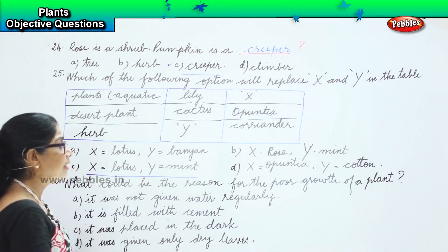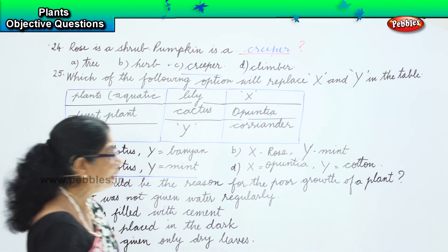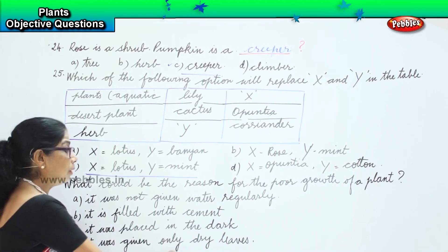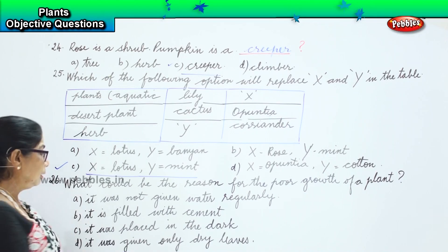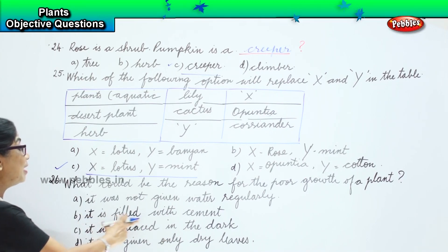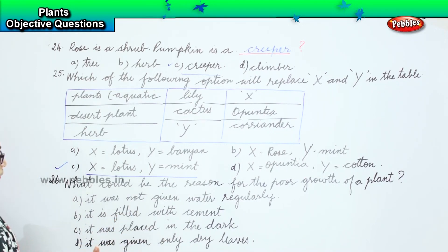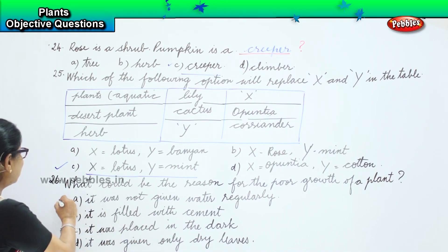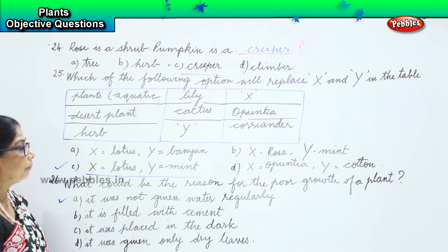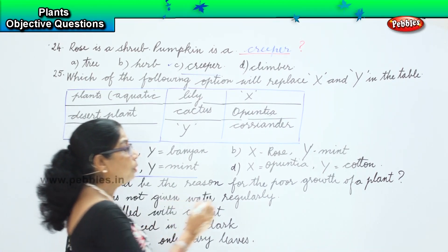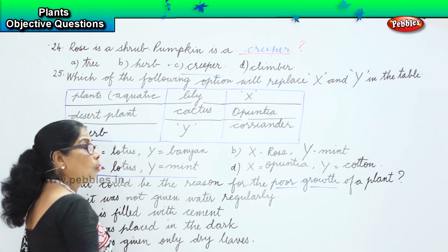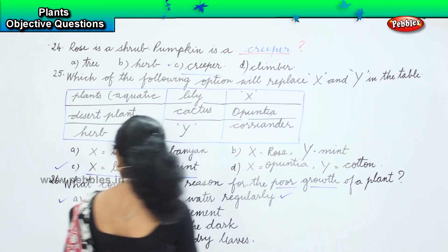What is the reason for the poor growth of a plant? The plant needs sunlight and water. Option D gives only dry leaves — no water. Option C places it in the dark — no sunlight. Option B fills it with cement instead of soil. Option A says it was not given water regularly — that is the most important reason for poor growth.